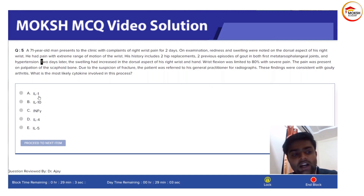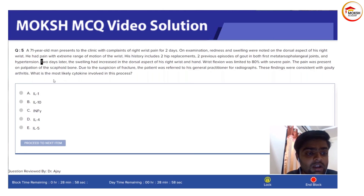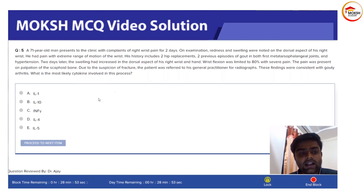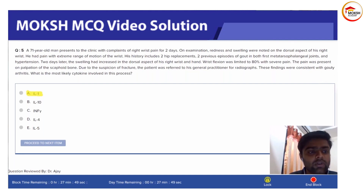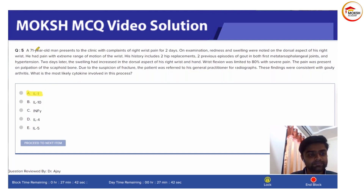Due to suspicion of fracture, the patient was referred to his general practitioner for a radiograph. This finding is consistent with gouty arthritis. The question asks which cytokine is most likely involved in this process. The correct answer is IL-1, interleukin-1.